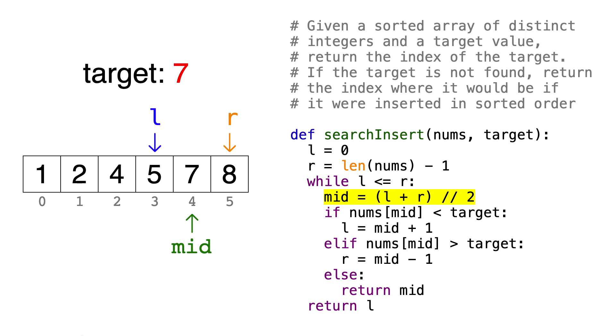3 plus 5 is 8, divided by 2 is 4, so mid is 4. The element at index 4 is 7, and we see that we've found the target. That means we enter the else block and just return 4, the index of 7, and we're done.